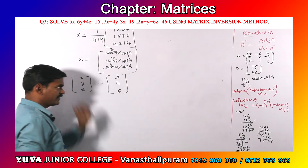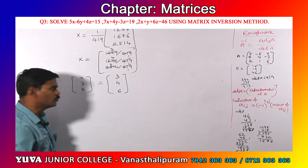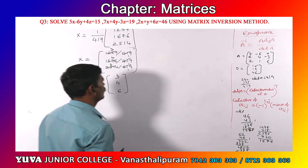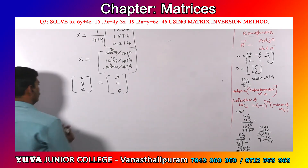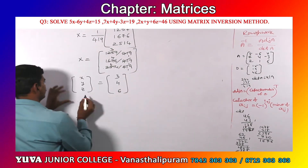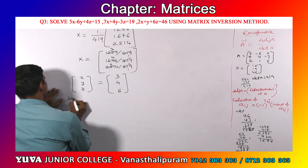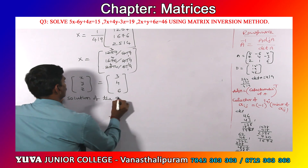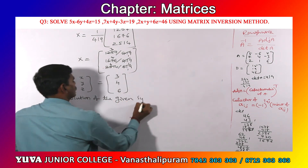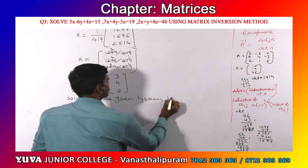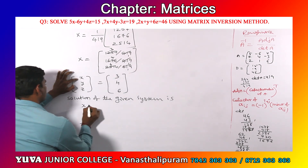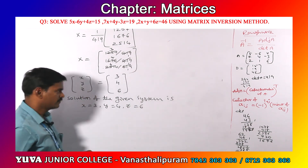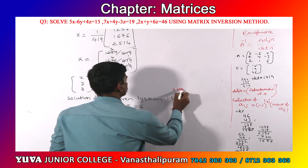So capital X equals 1 by 419 into [1257; 1676; 2514]. Dividing each element by 419: 1257÷419 = 3, 1676÷419 = 4, 2514÷419 = 6. For finding up to adjoint of A we get 2 marks, and for the remaining part 2 more marks. The solution of the given system is x equals 3, y equals 4, z equals 6.